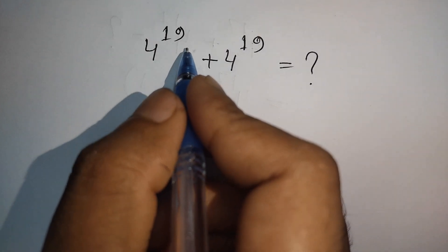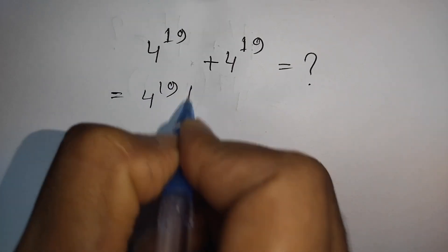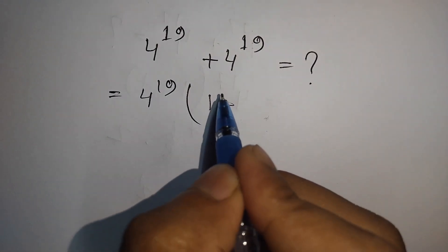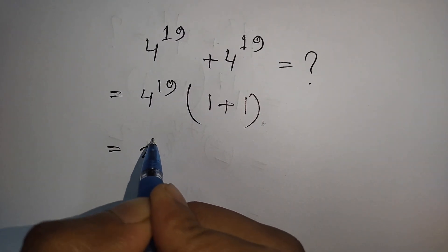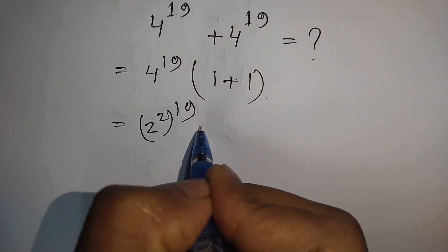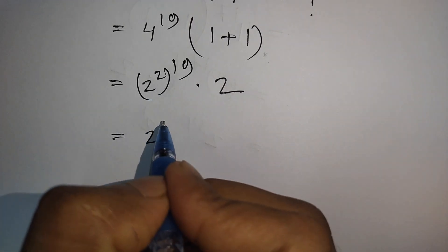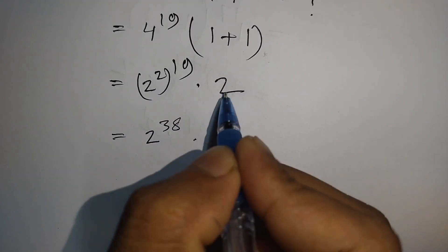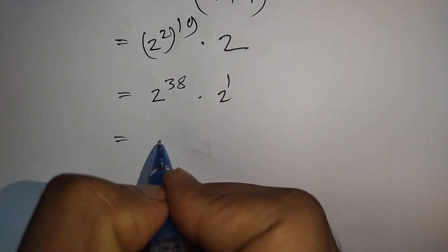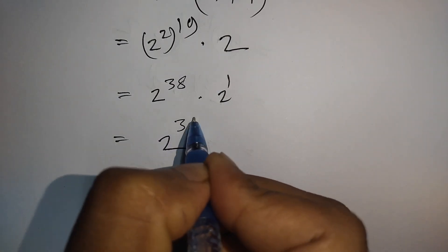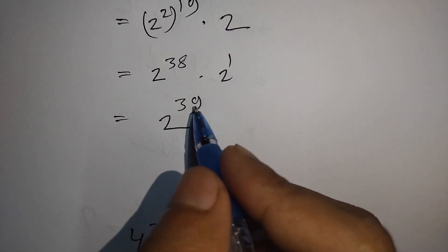How to solve 4 to the power 19 plus 4 to the power 19? First, take 4^19 as common: 4^19 times (1 plus 1), which equals 4^19 times 2. Now 4^19 is the same as 2^2 raised to the 19, which is 2^38. So 2^38 times 2 equals 2 to the power 39. We have the same base with different powers, giving 2^(38+1) equals 2^39 as the correct answer.